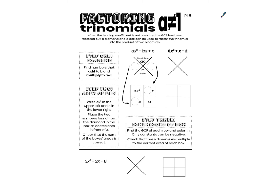Factoring trinomials when a does not equal 1. The sorts of trinomials we're used to factoring look like this: ax squared plus bx plus c. When we factor this sort of trinomial we use our diamonds and we look for two numbers that multiply to c but add to b. Now by a equal to 1, what I mean is the coefficient in front of the x squared term is an invisible one. In this toolkit I'm looking at examples where I have a different coefficient in front of x squared.